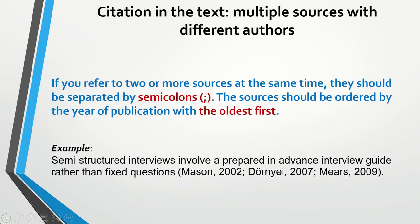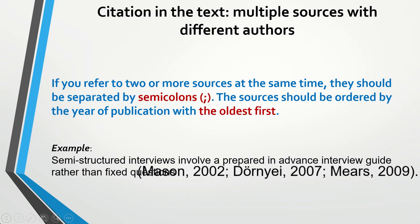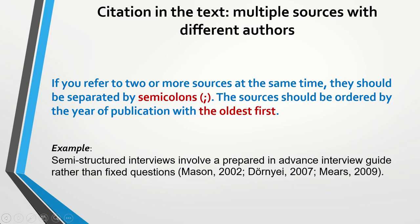If you refer to two or more sources at the same time, they should be separated by semicolons. The sources should be ordered by the year of publication with the oldest first. Here I have three sources: Mason 2002, Journey 2007, and Mears 2009. Mason 2002 comes first because we need to order the sources by year of publication with the oldest first. Please also pay attention that there is a semicolon after each source.